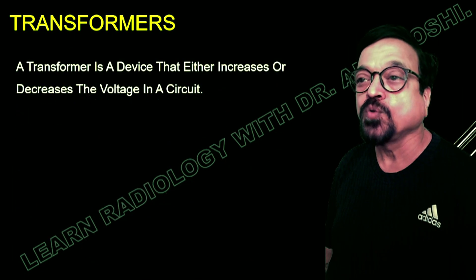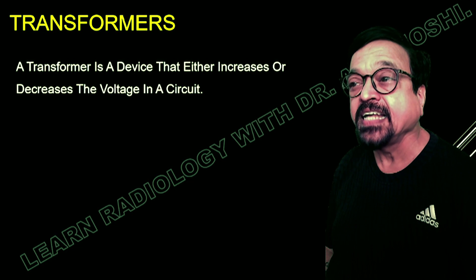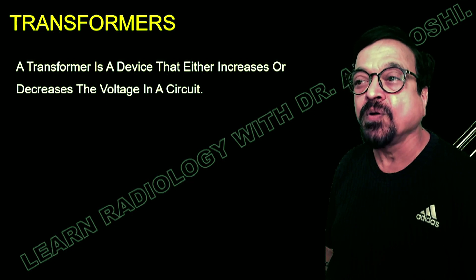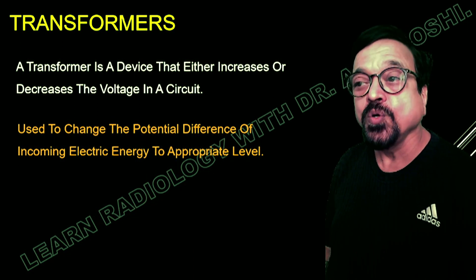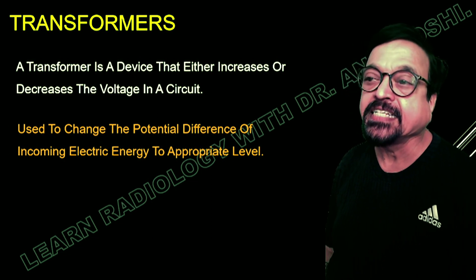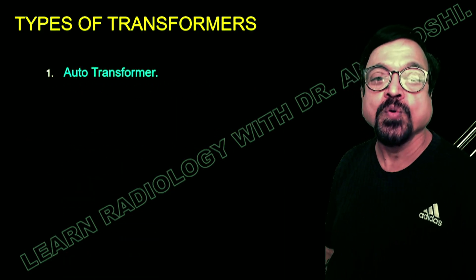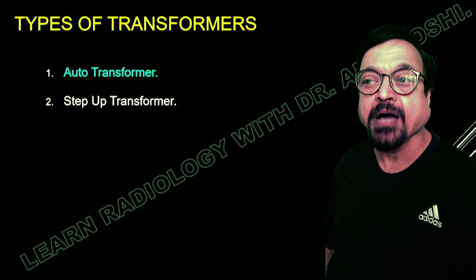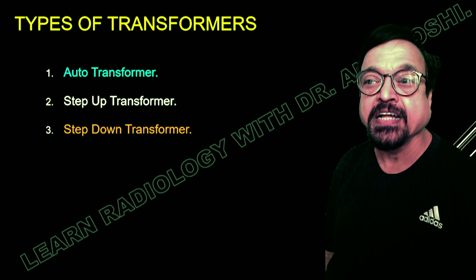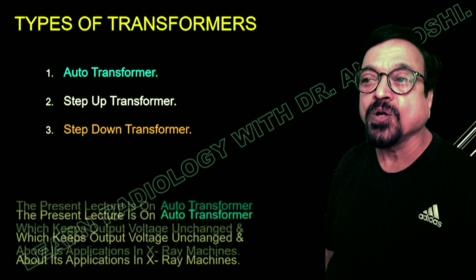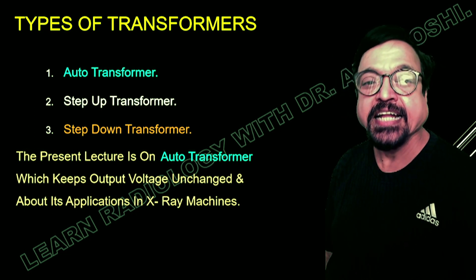Today's lecture is particularly about the auto transformer. A transformer is a device that either increases or decreases the voltage in the x-ray circuit, used to change the potential difference of incoming electricity to appropriate required levels. Types of transformers include auto transformer, step-up transformer, and step-down transformer. Today's focus is the auto transformer, which keeps voltage unchanged and is used in x-ray units.